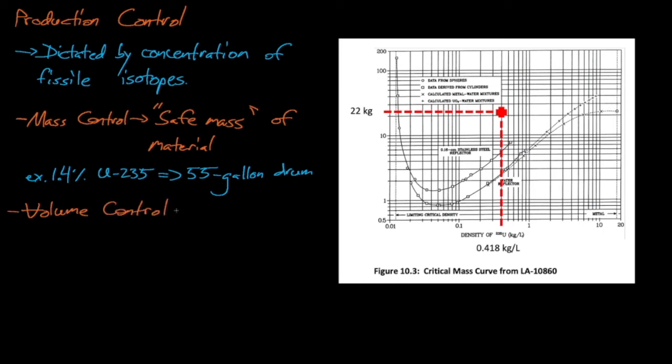Likewise, for volume control, a facility that processes 90% enriched uranyl nitrate could guarantee that they always maintain a safe volume of material by limiting the size of the containers in their facility to one gallon or less. Leaving a 5,000 milliliter round bottom boiling flask sitting on the shelf is a recipe for disaster in such a facility. Even if the rules say never to use that container, if you leave that container there long enough, it's perhaps inevitable that someone will end up filling it up with the 90% enriched solution. Therefore, it's better to limit the volume of all containers in the facility to a volume that is safe for that fissile solution's concentration and enrichment.